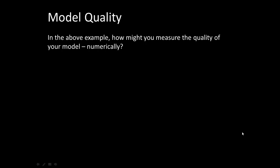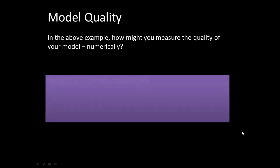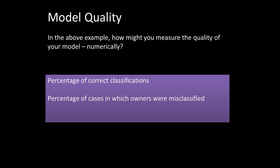To convert our understanding of model quality into actual numbers, one might look at the percentage of cases in which the model is correct — meaning it predicted an owner as an owner or a non-owner as a non-owner. We could call this the percentage of correct classifications. But we might also look at other ideas, such as the percentage of actual owners who were misclassified, and the percentage of non-owners misclassified as owners. Using only percentage of correct classifications implicitly assumes all correct classifications are equally good and all incorrect ones equally bad, which may not be the case.